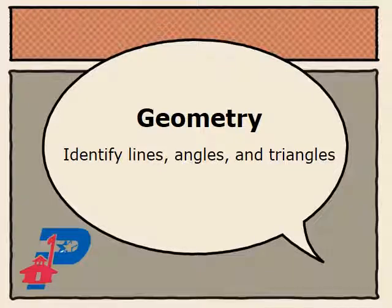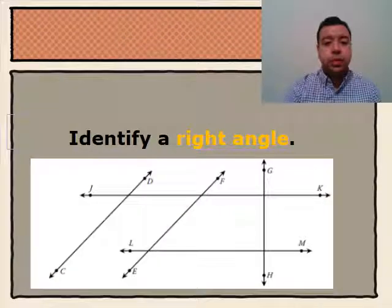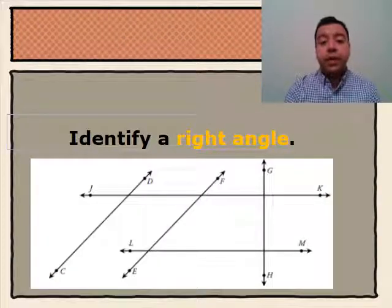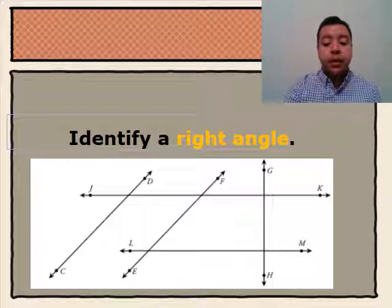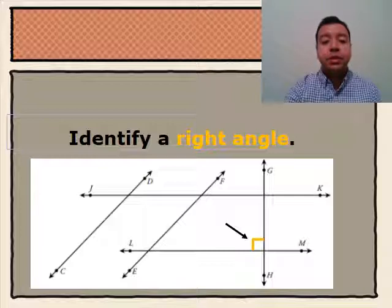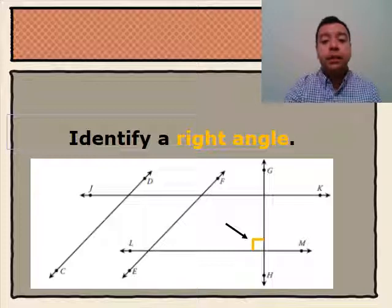Today we'll be identifying lines, angles, and triangles. We'll first identify a right angle in the diagram below. Here, where line LM and line GH intersect, we see that there is a square corner at the vertex. This is a 90 degree angle, meaning it is a right angle.